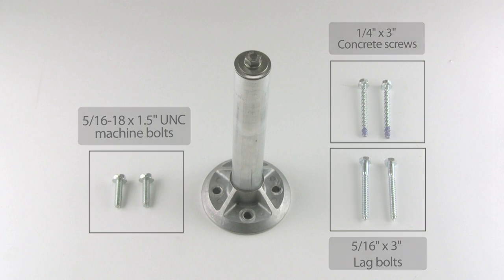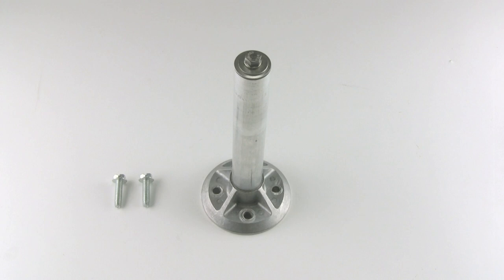In this demonstration, we are going to be mounting on corrugated steel, so we're going to use these commonly available machine bolts.